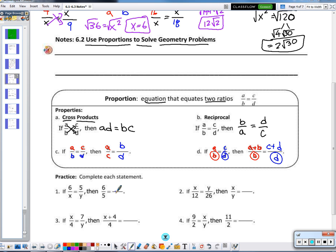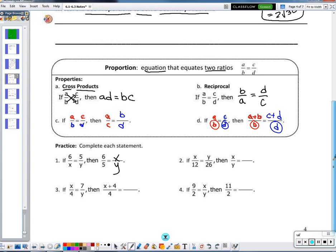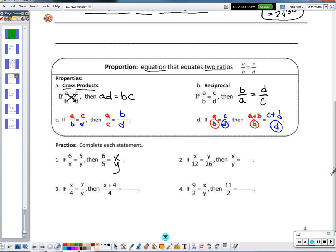X/Y. It's using that pattern from letter C. What about number two? Erica, what'd you get? X/Y and then 12/26. Same pattern, right? Just with numbers. I could always simplify 12/26, right? They both have a common factor of two. So that would be 6/13.